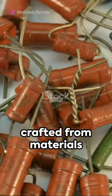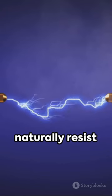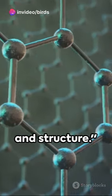Fixed resistors are crafted from materials like carbon, metal, or oxide film. These materials naturally resist electrical current, and the level of resistance is determined by the material's composition and structure.